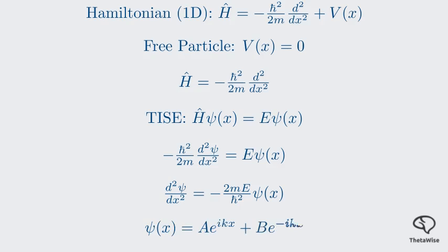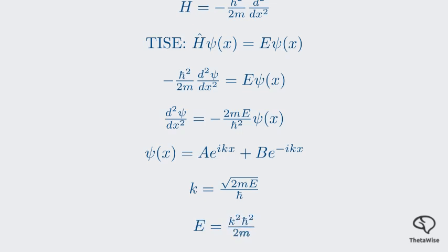We can rearrange this slightly, and the general solution to an equation of this form, ψ double prime equals a constant times ψ, is a sum of two exponential functions. Here A and B are constants we determine from boundary conditions, and k is what we call the wave number. This value k is directly related to the energy E. This solution describes a superposition, or combination, of two plane waves traveling in opposite directions. The energy E can be any positive value. It's continuous, just like in classical mechanics.